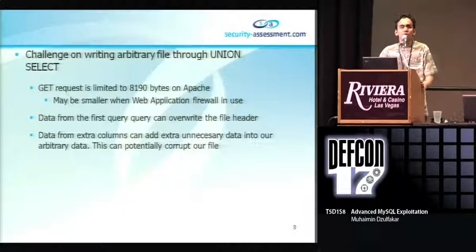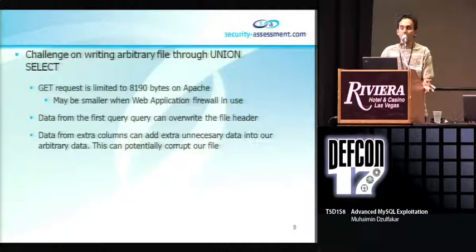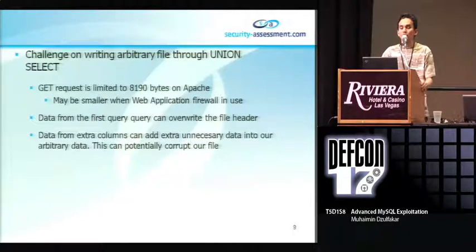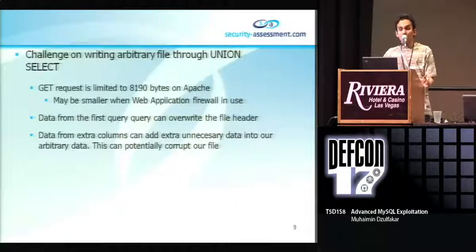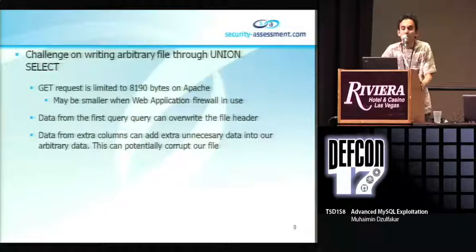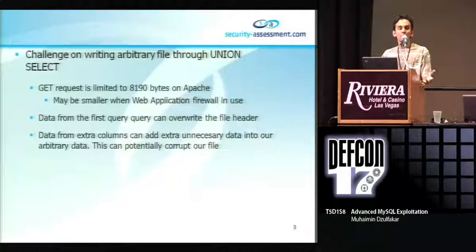If the application does not support stack queries, the only method to write a file is through UNION SELECT. There are some challenges in writing an arbitrary file through UNION SELECT. First, the GET request limits us to only up to 8,190 bytes on Apache. Also, data from our first query can override our file header. Finally, data from extra columns can add unnecessary data into our arbitrary file, potentially corrupting it.